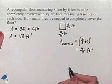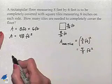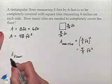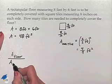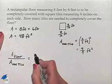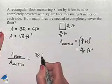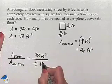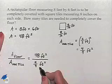If we're trying to determine how many tiles are needed to completely cover the floor, we need to take the area of the floor and divide that by the area of one tile. That's going to give us 48 square feet divided by 4 ninths square feet per tile.